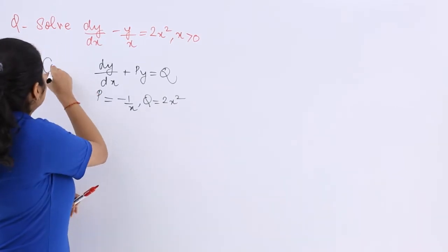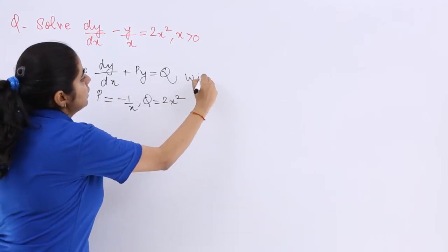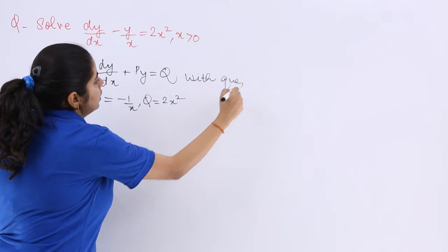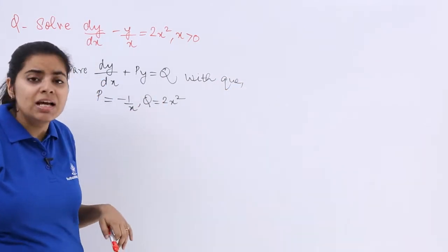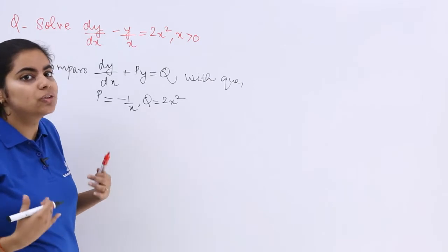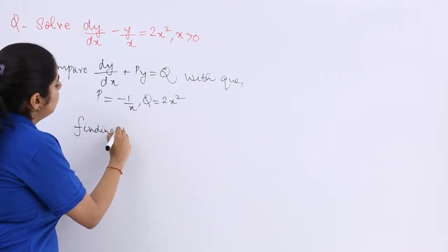Now when you compare this with the given question, you find that your p is this, your q is this, things are sorted. Now in this type of a question you know the next step is finding the integrating factor.